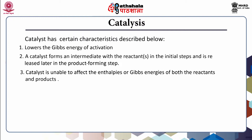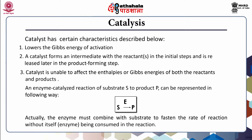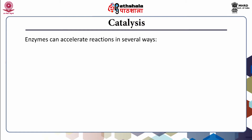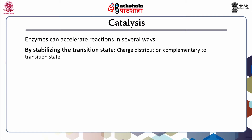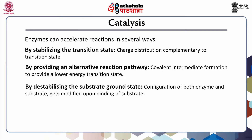An enzyme-catalyzed reaction from substrate to product can be represented as shown in the slide. The enzyme must combine with the substrate to catalyze the rate of reaction without itself being consumed. Enzymes can accelerate reactions in several ways: by stabilizing the transition state with charge distribution complementary to it, by providing an alternative reaction pathway, and by covalent intermediate formation to provide a lower energy transition state.